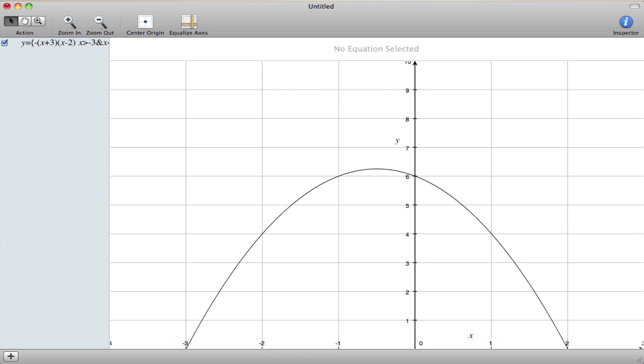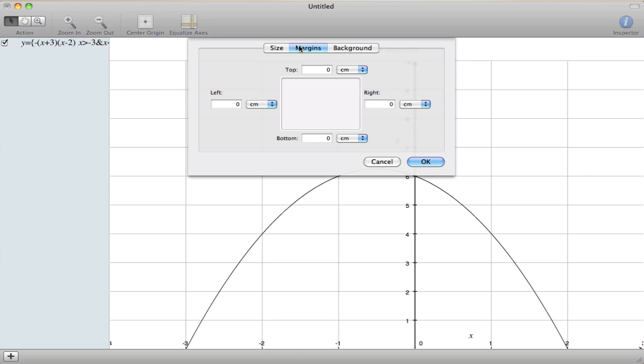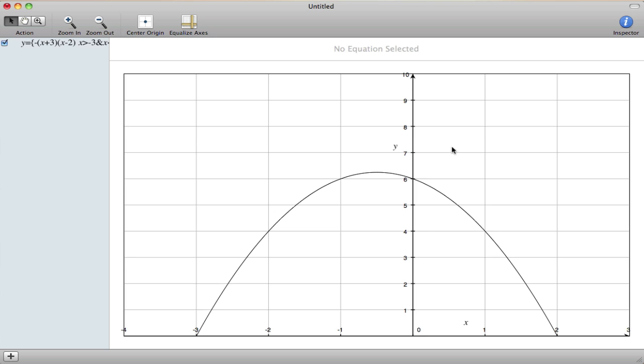I don't like that very much. So I'm going to go up to Format, Layout, and Margins, and just put 1 centimeter on all of these. And it puts a nice border around it. So if you want to end up taking a screenshot, this is pretty helpful.